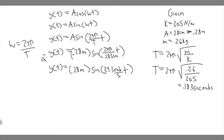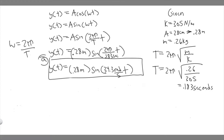Now that we've solved part A, let's move on to part B. For part B, we're trying to find at what times the spring will be the longest and shortest. For this problem you have to think about it intuitively. We know this is going to be a sine wave because we just calculated that. So what does a sine wave actually look like?